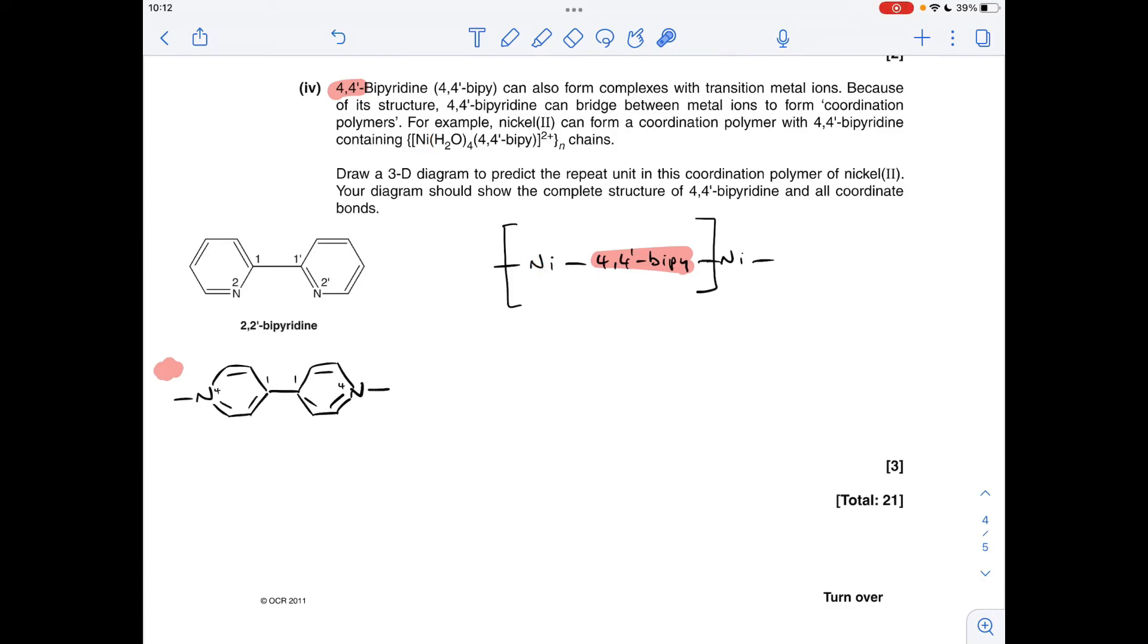We've got nickel with four waters around there, you've got your 4,4-bipyridine bridge, and obviously then that repeats to the next one. In terms of a 3D diagram, we need to draw something like that. Remember, effectively it's based on an octahedral complex. Normally these two bonds would be in the vertical position and the wedges and the dash lines would be around the middle, but we're drawing it horizontally just to try and tie in with a typical polymer chain diagram.